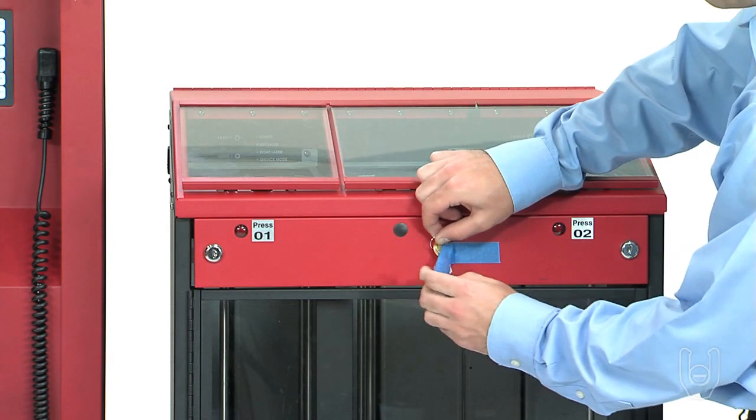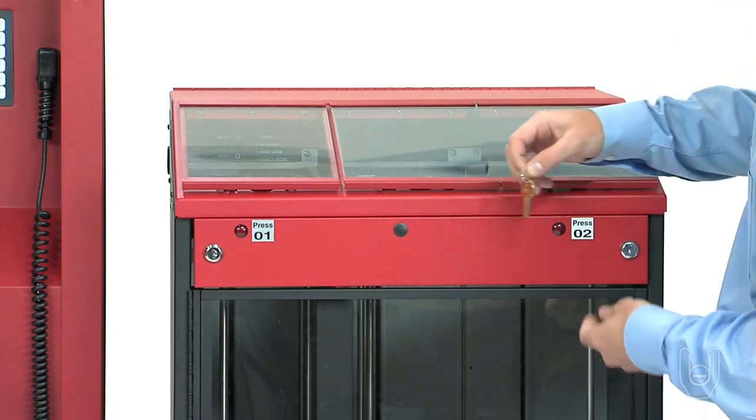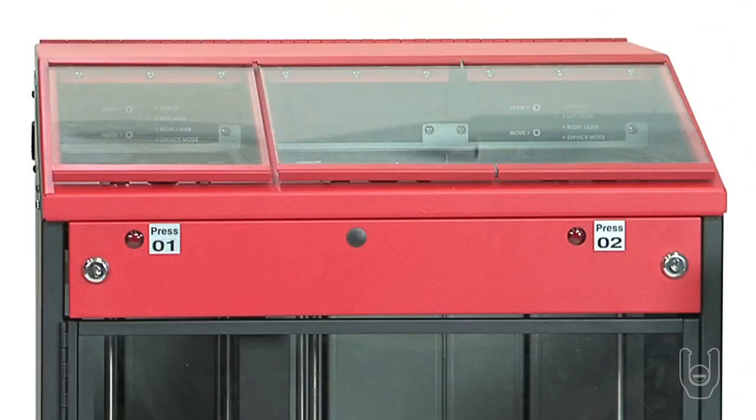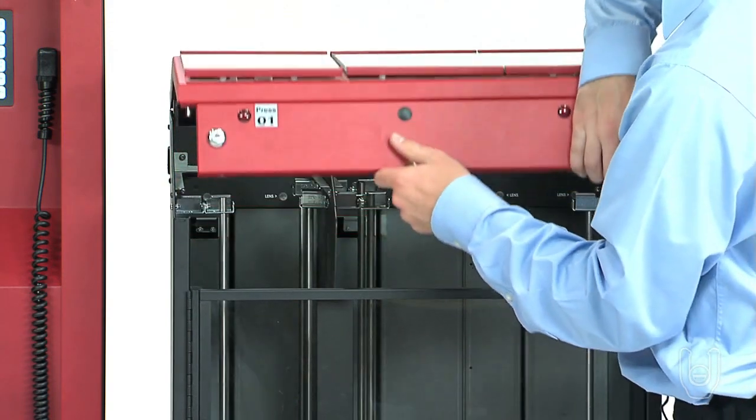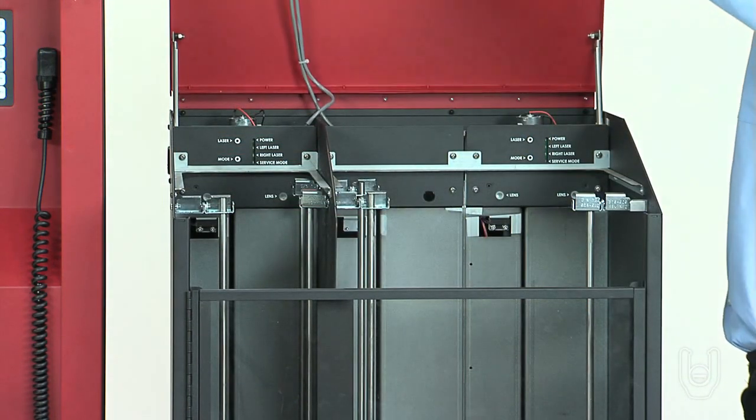Once the cabinets are stable and level, use the keys to unlock the top frame of each cabinet. The locks are located on the top left and right of each cabinet. Once the top frame is unlocked, lift the top frame up to gain access to the inside of the cabinet.